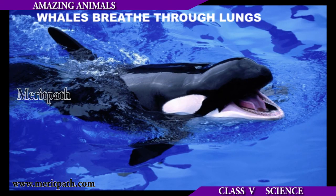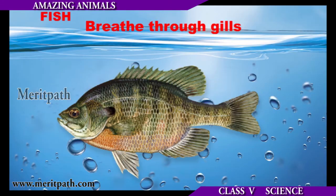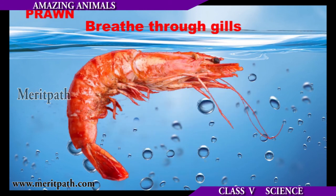Whales, which live in water, have large lungs which help them breathe in a lot of air. They come up to the surface of water to breathe. Animals like fish, crabs, and prawns that live in water breathe through their gills.